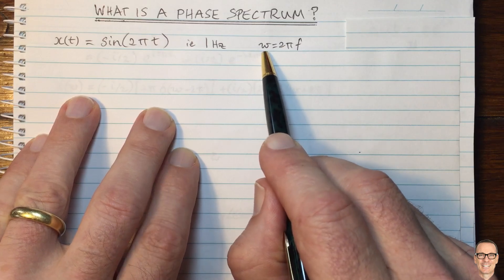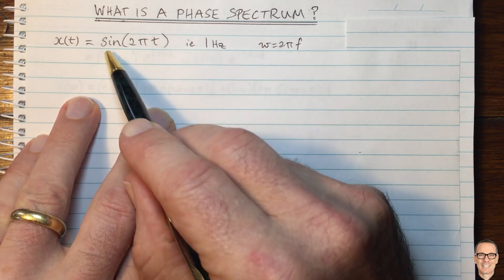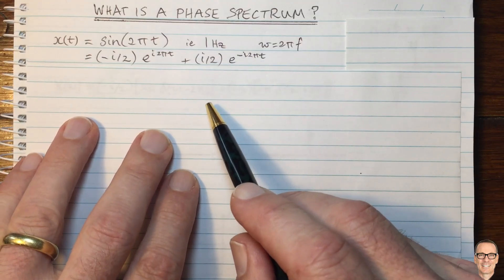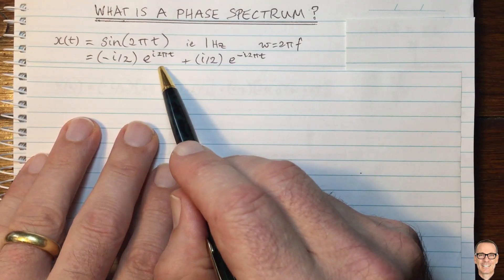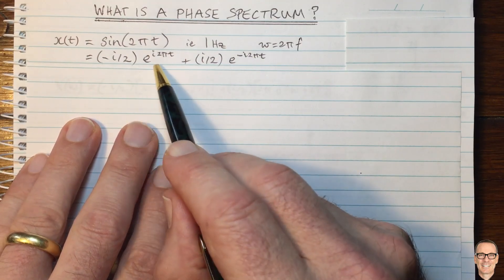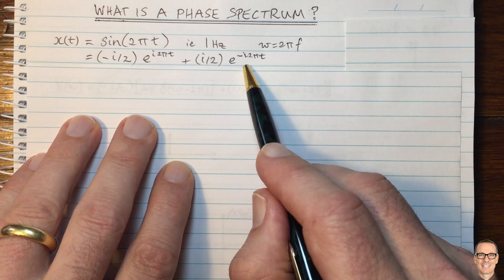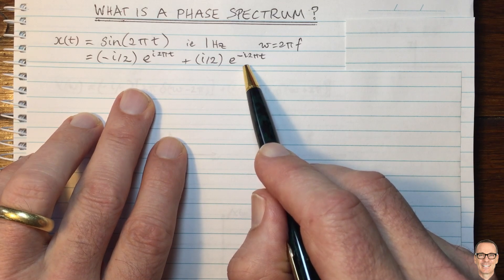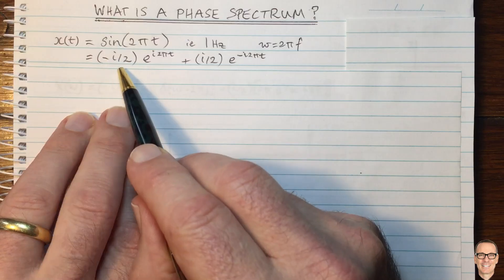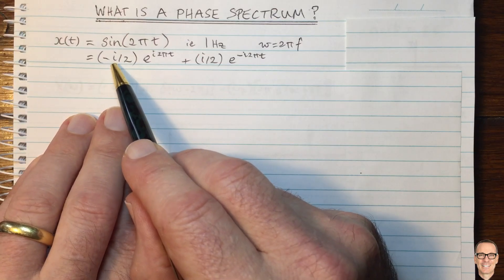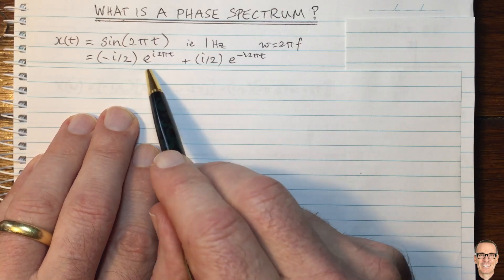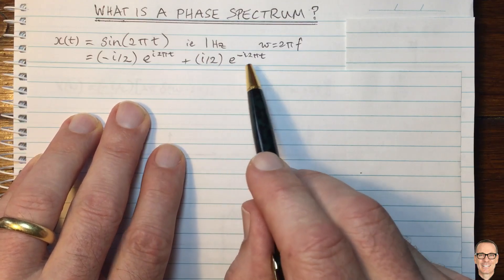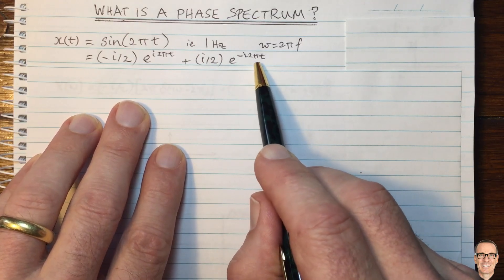Omega is the radial frequency. So let's rewrite this in complex exponential form. This sinusoid equals minus i, the complex variable, times a half, times this expression, and then we've got a similar term with a negative of this expression.